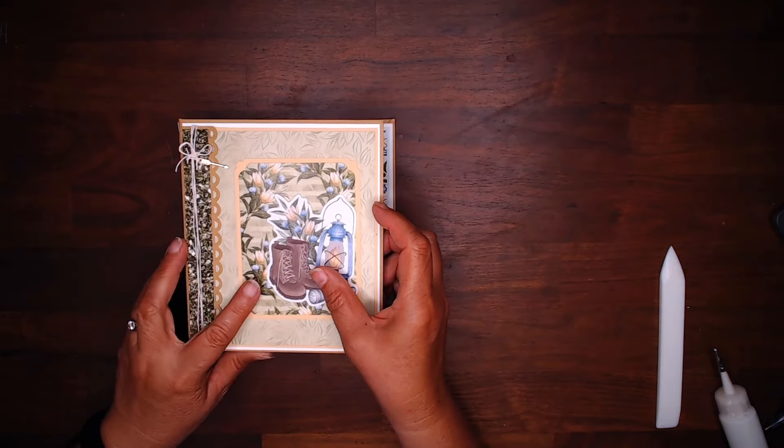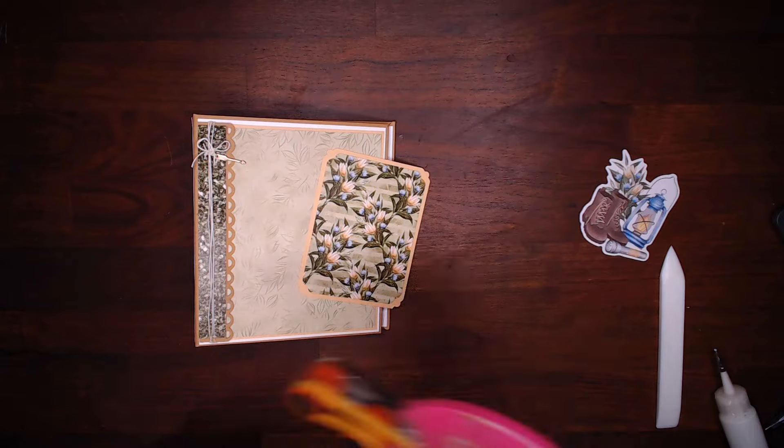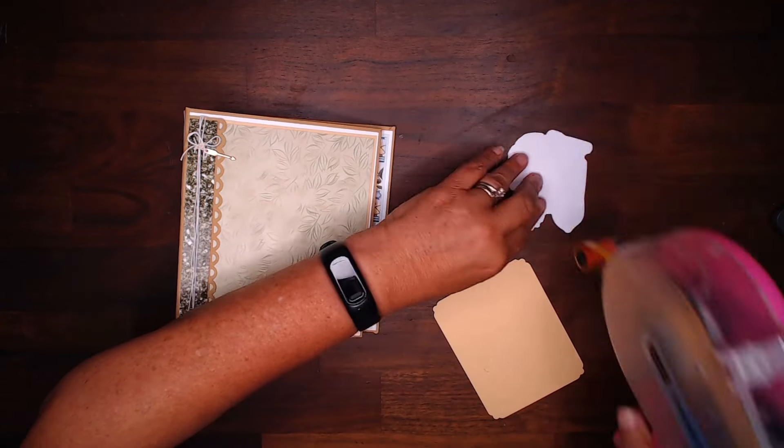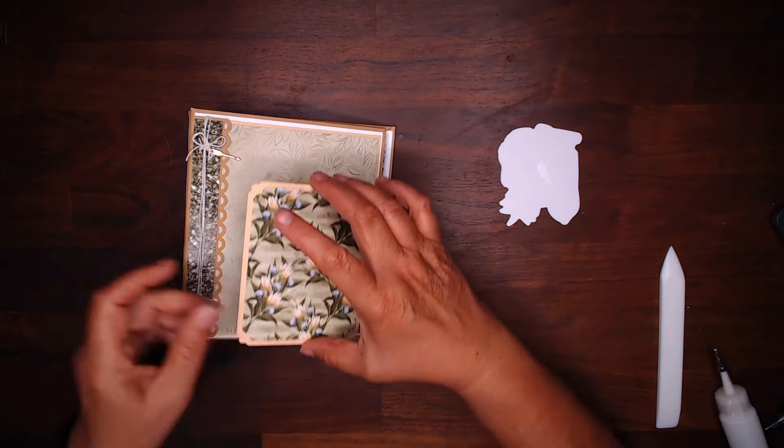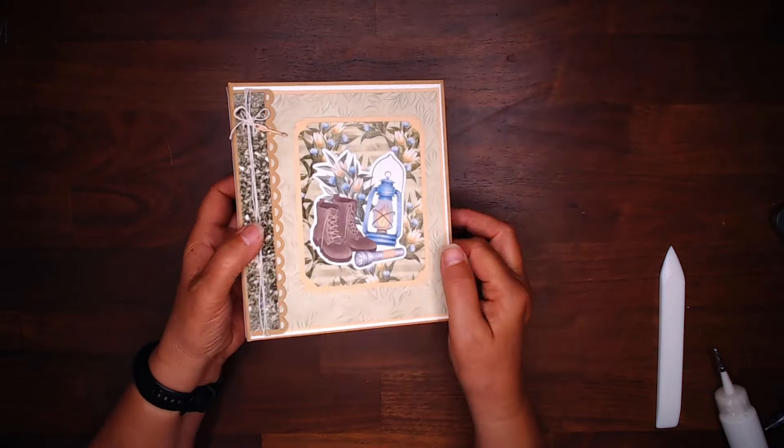So, again, I take my little ATG, stick it on so I don't lose it, and I'll be able to easily take it off once I'm ready to play with it. It sort of gives me a chance to audition these pieces.